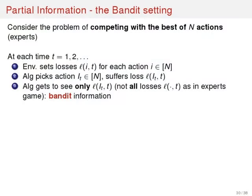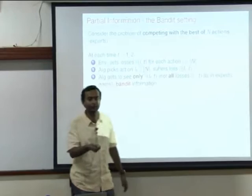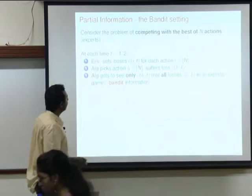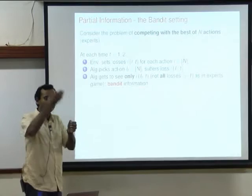Then you get to see how much loss you suffered, since you suffered that loss. So suppose there are 10 actions at each point in time. At time equal to 1, if you chose action number 5, you will essentially get the fifth component of the vector that is the loss of all the actions at time 1.